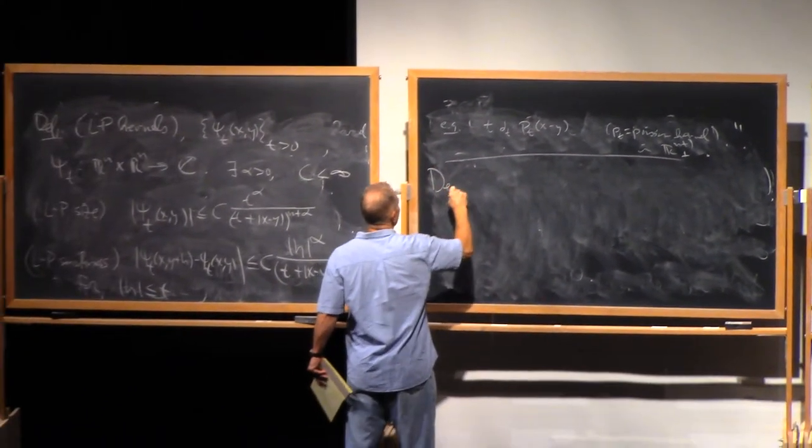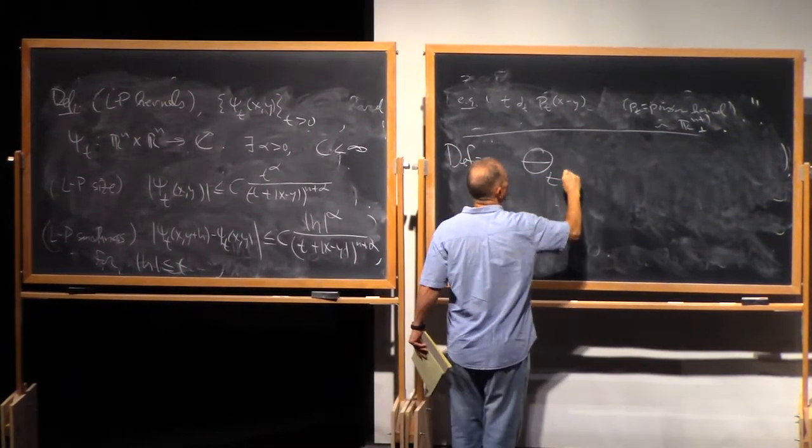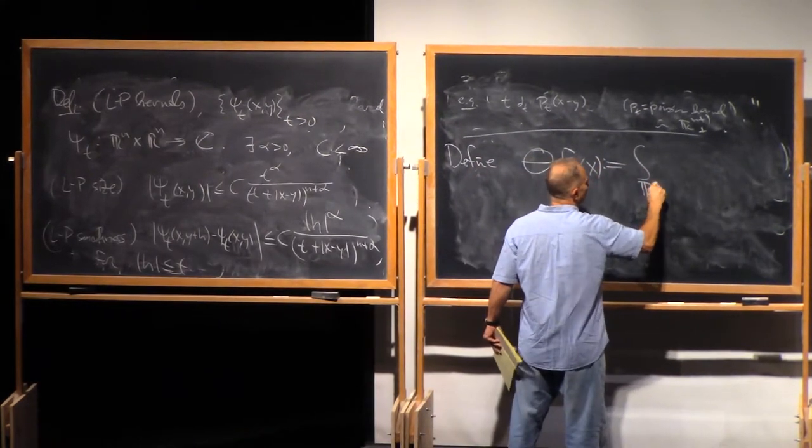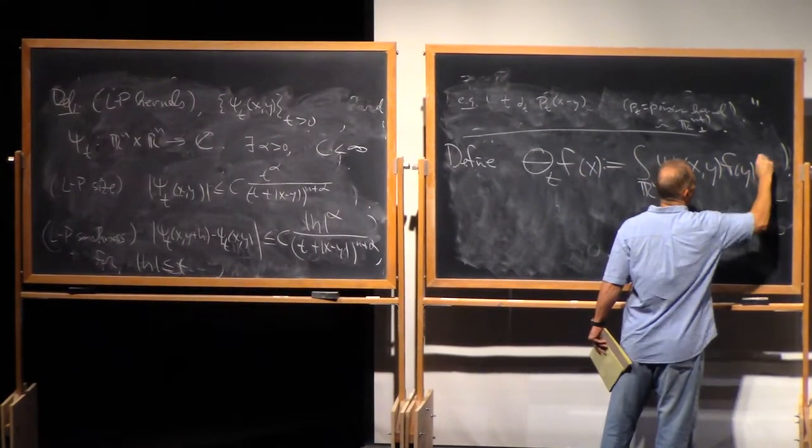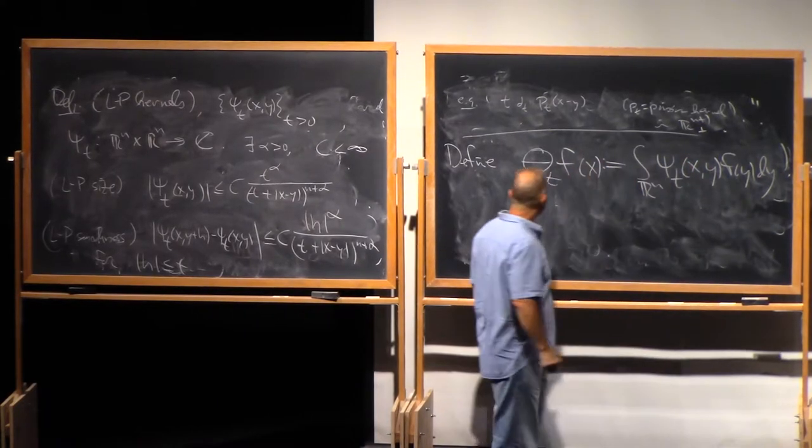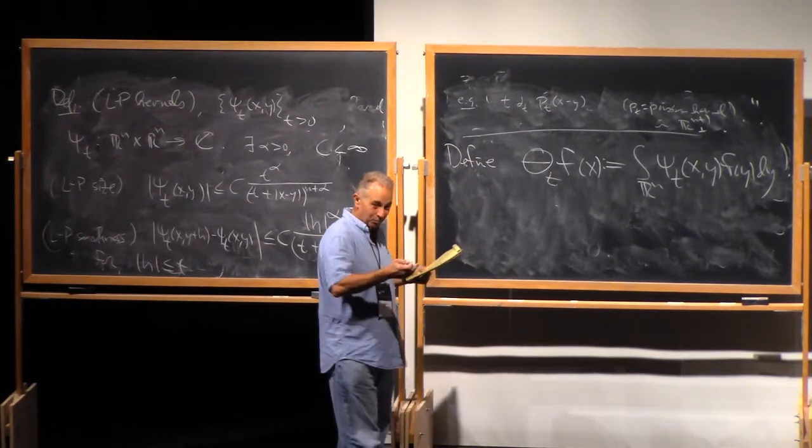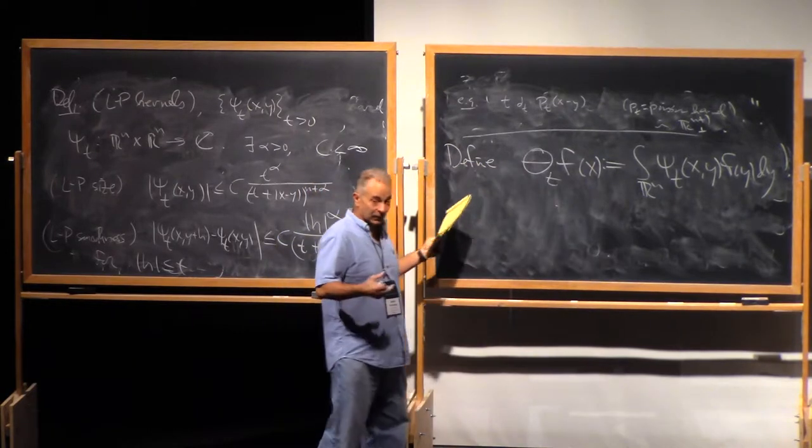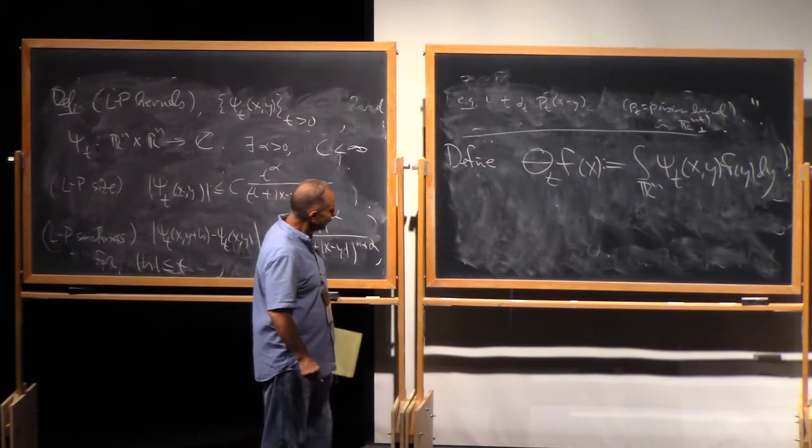And now associated to these guys, we're gonna define an operator theta_t. f of x is gonna be defined to be integral in Rn against the kernel psi_t. And I apologize for this because when I start writing rapidly, my thetas and my q's start to morph into each other. I will try to reserve the q_t for the convolution guys and theta for the non-convolution. Hopefully you'll be able to read the difference.